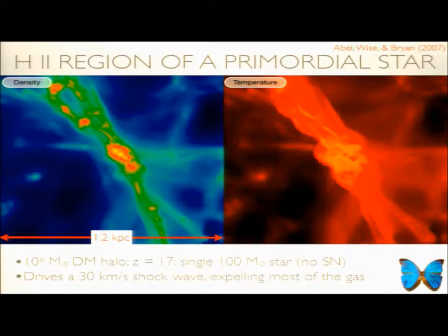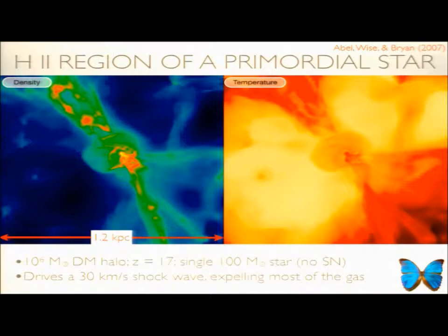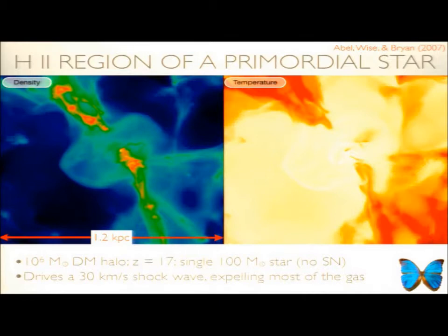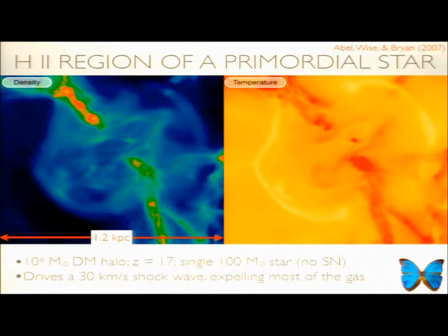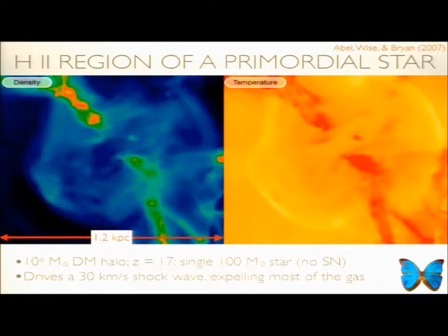Here I show a projection of density and temperature of a mini halo that has around a million solar masses. It forms a star in this HII region, breaks out, and forms this butterfly-shaped HII region. Because it drives this 30 kilometer per second shock, it drives all the gas out of the mini halo, leaving behind a very gas-poor halo. This just sets the stage — or initial conditions — for galaxy formation. You're left with all these gas-poor mini-halos that go on to merge and form larger and larger halos, giving you some suppressed star formation in these galaxies, just because you have less fuel for star formation.